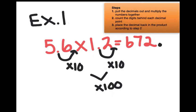Right now the decimal point in 672 is right there. When I'm dividing by powers of 10, I'm going to move the decimal point to the left. I want to bring it back in so that it's a division problem of dividing by 100. That means I need to move it 2 times back in — dividing by 10, then dividing by 100 — so I would place the decimal point right between the 6 and the 7. So 5 and 6 tenths times 1 and 2 tenths is the same as 6 and 72 hundredths.